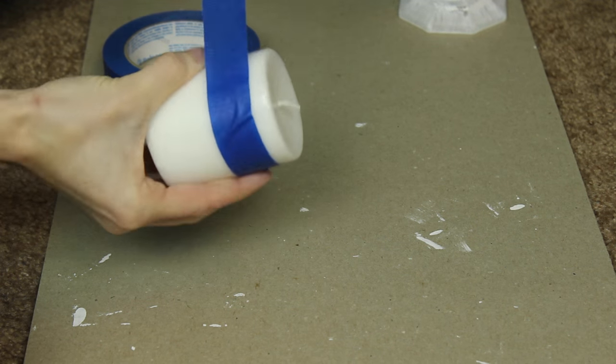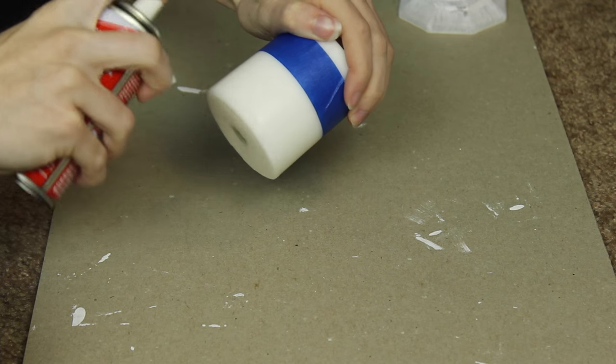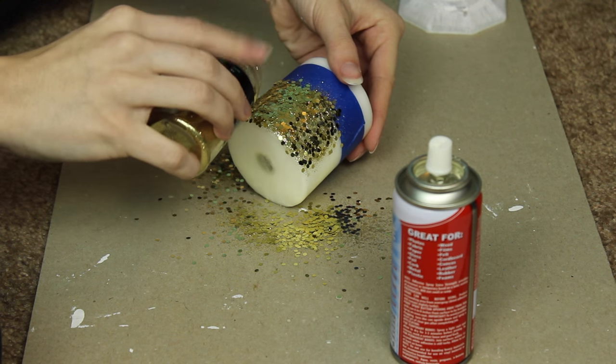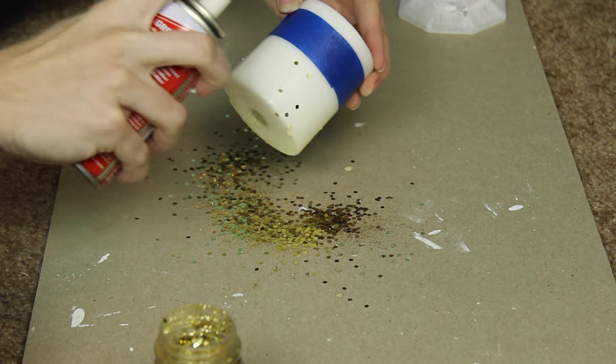Next I'm taking two candles that I got from the Dollar Tree as well for a dollar and just taping them off and using a spray adhesive and adding gold glitter to the bottom half of the candle. And I'm doing this for two candles, which I only show one.